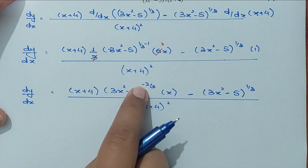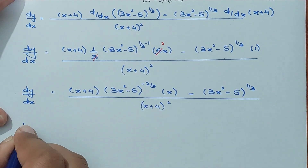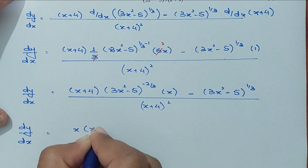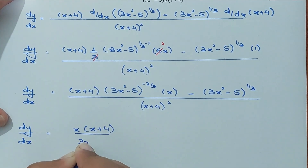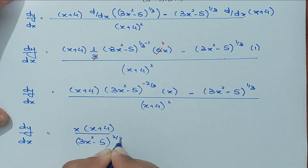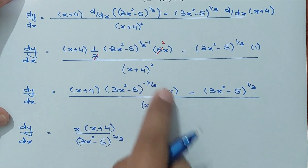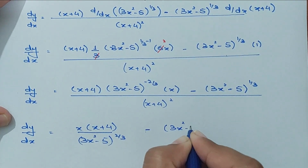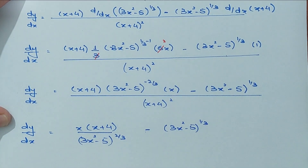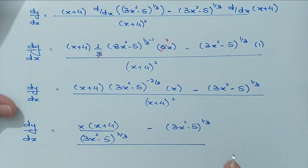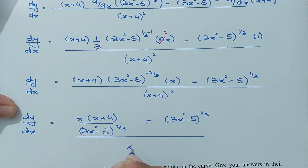Now we have a negative power, so we shift it into the denominator. So dy/dx is (x) times (x + 4) divided by (3x² − 5) to the power 2/3 — the power becomes positive when shifted to the denominator — minus (3x² − 5) to the power 1/3, this whole term divided by (x + 4) whole square. Let me simplify this further.